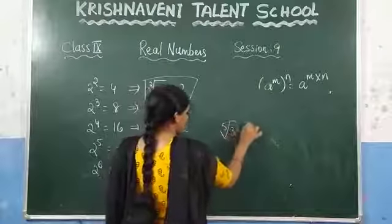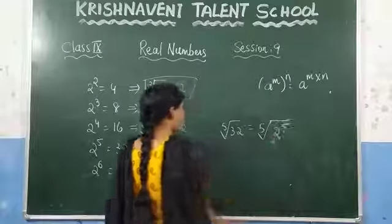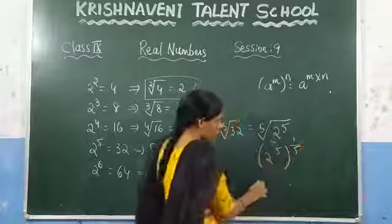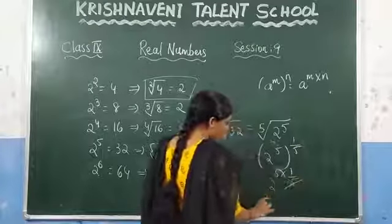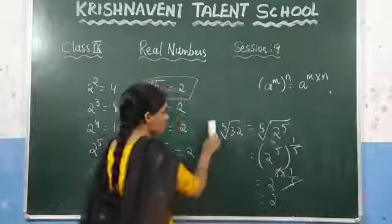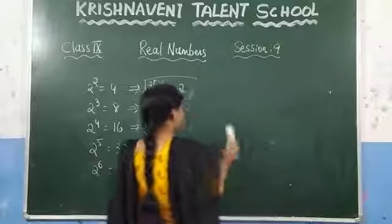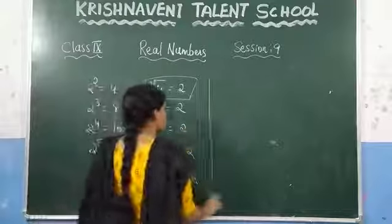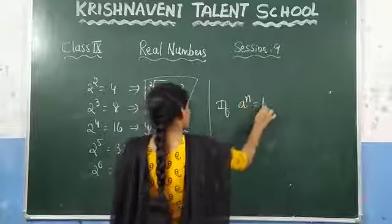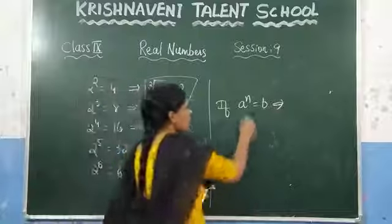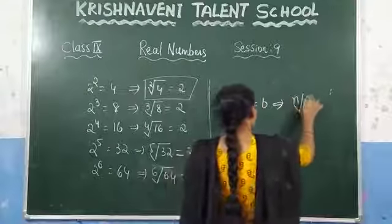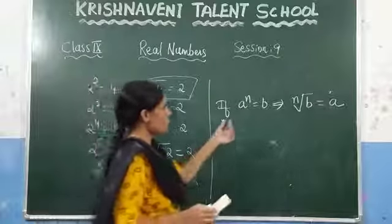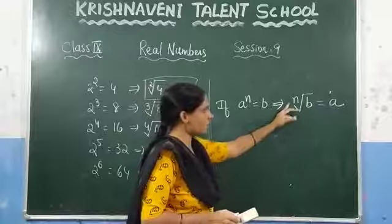For the 5th root of 32: by prime factorization, 32 can be written as 2 power 5. The 5th root means power 1 by 5. So you get 2 power 5, whole power 1 by 5, which equals 2 power 5 into 1 by 5. The 5s cancel and you get 2. So in general, if you take any power to the right-hand side it becomes a root. Writing this in variables: if A power N is equal to B, then the Nth root of B is equal to A.